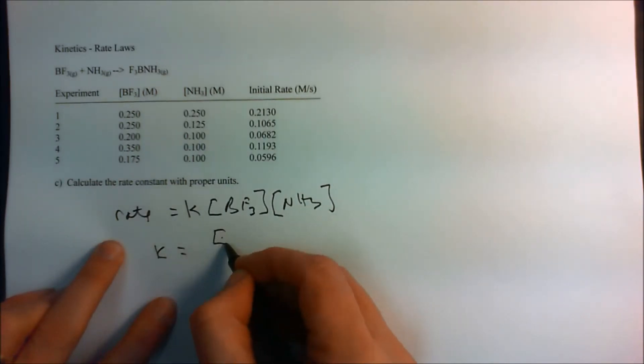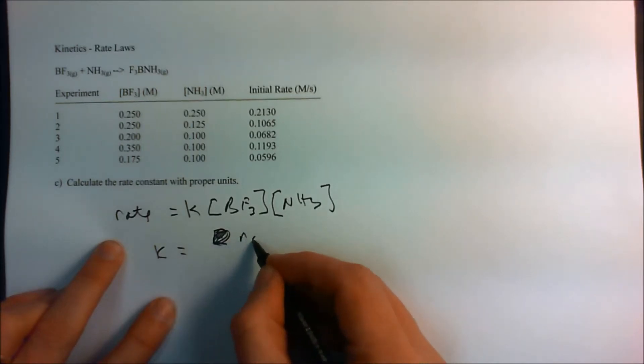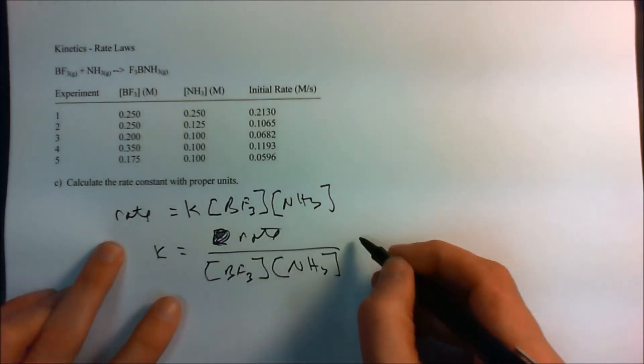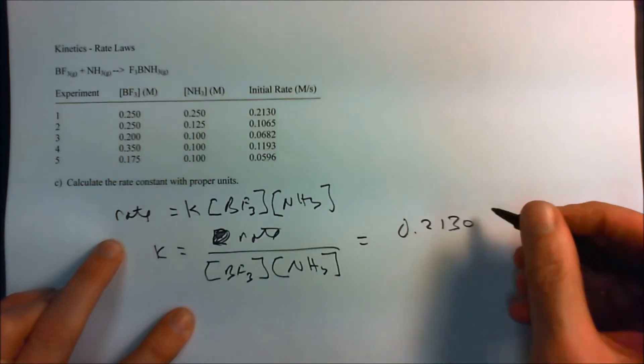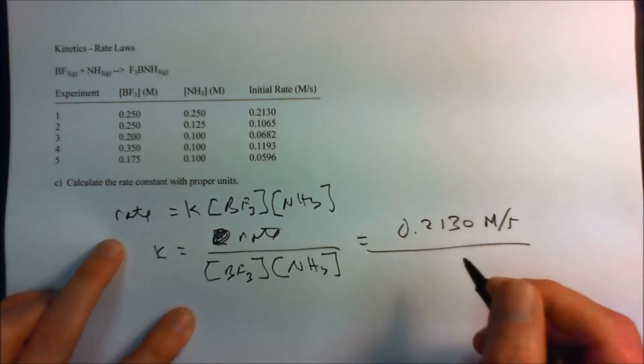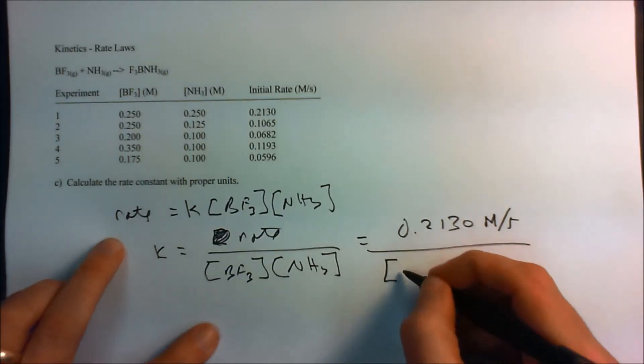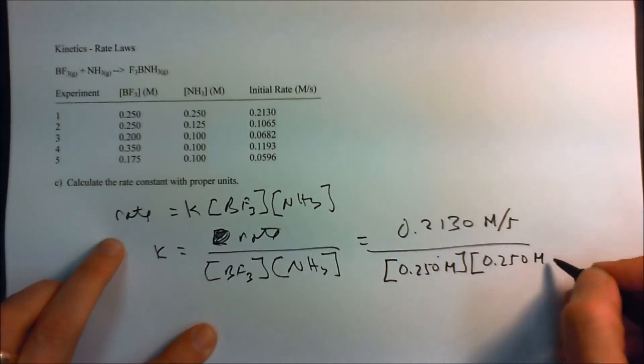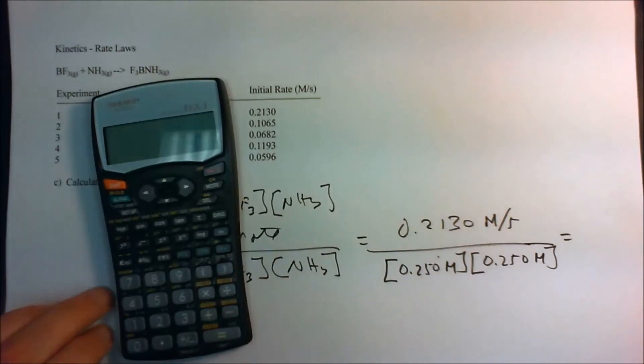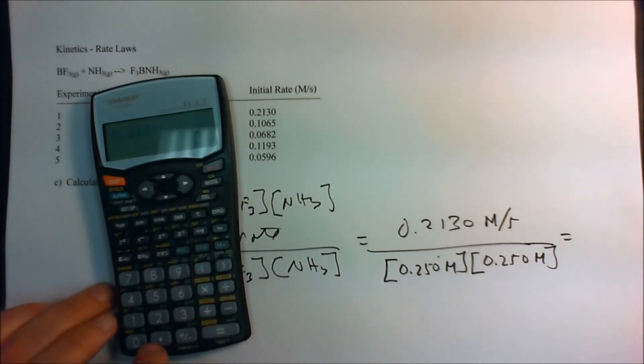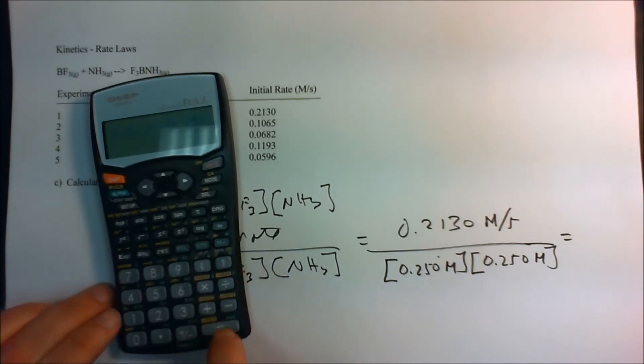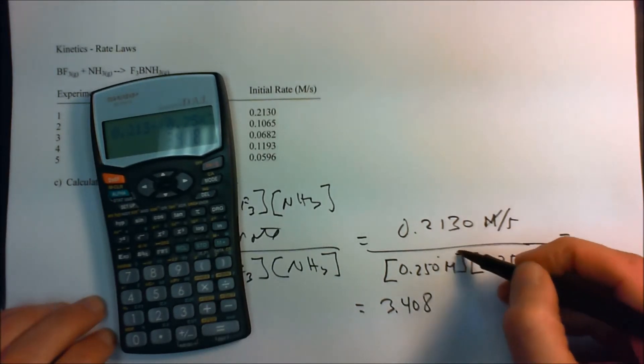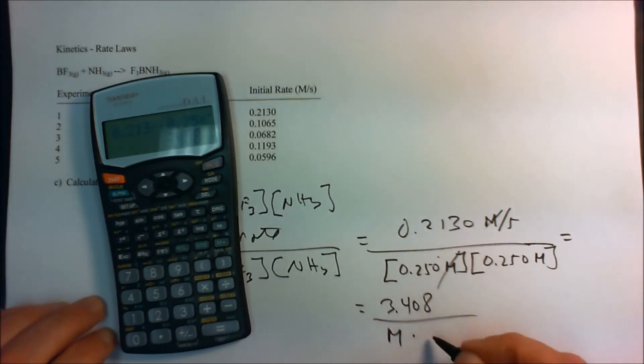So our K is going to be equal to the rate divided by the concentrations. And that's going to be a rate of 0.2130 moles per second, divided by 0.250 molarity, and also 0.250 molarity. And we put this in our calculator, and we get 0.213 divided by parentheses, 0.25 times 0.25, close parentheses, equals, and I get 3.408. And the correct units is going to be, one of these M's is going to cancel, so the correct units is per molarity seconds.